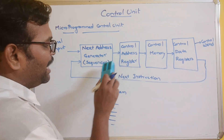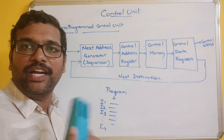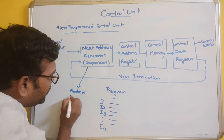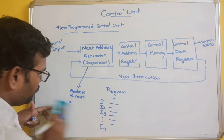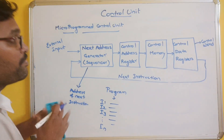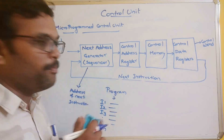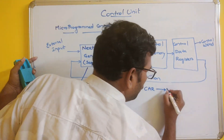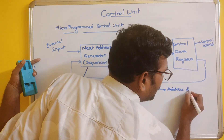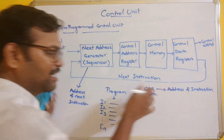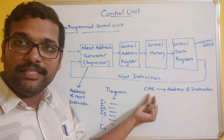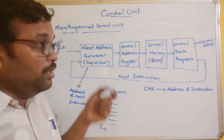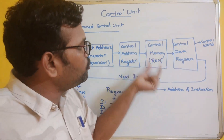The next address generator holds the address of the next executing instruction. From there, the control address register stores the address of whatever instruction needs to be executed. From there, there is control memory, which we usually call ROM — that is permanent storage. The instructions to be executed are stored permanently in this control memory.